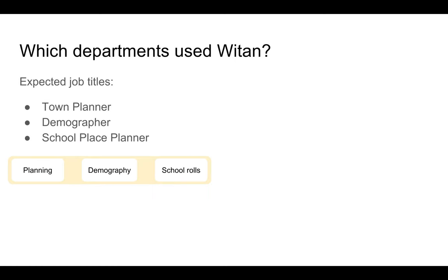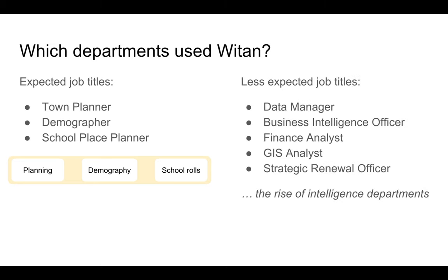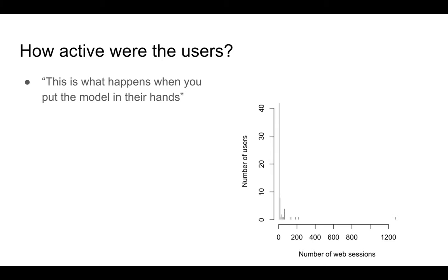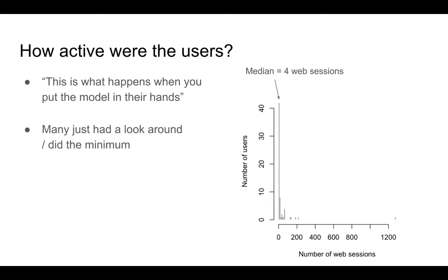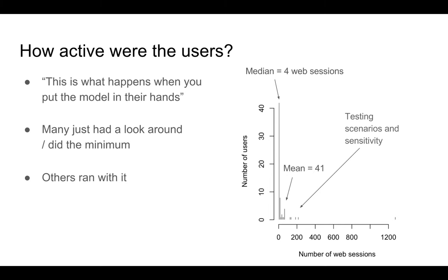Which departments used Witan? We saw expected job titles like Town Planner, Demographer, and School Place Planner. But we also saw less expected job titles, such as Strategic Renewal Officer and Finance Analyst. This might reflect the rise of intelligence departments in the boroughs. And how active are the users? The graph shows the number of web sessions per user. We think this over-dispersed shape suggests there are probably two kinds of users. Many users seem to have come on to have a look around or just do the minimum needed for their projections — reflected in the median of four web sessions. However, we identify another kind of user that was testing out scenarios and sensitivity assumptions, which makes the mean of the distribution 41 web sessions. And one user really did run with it, with over 1,200 sessions.